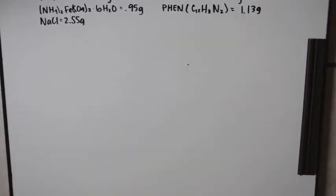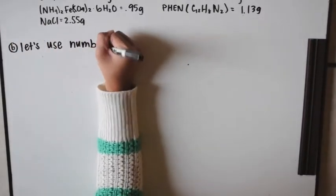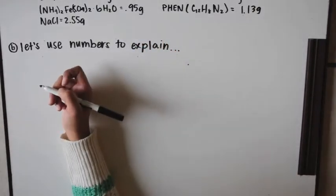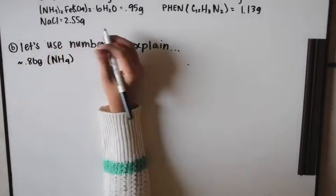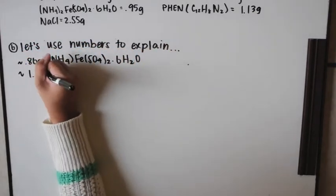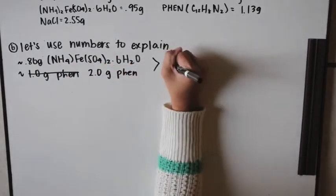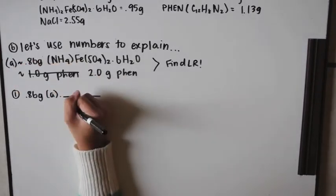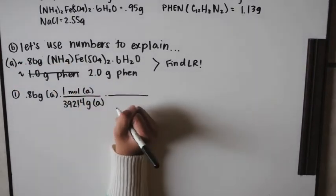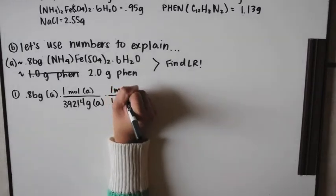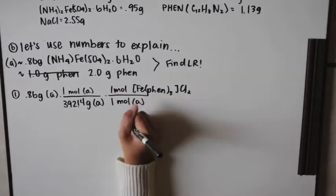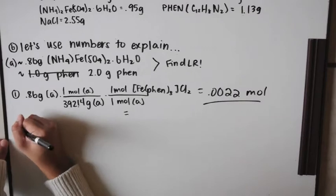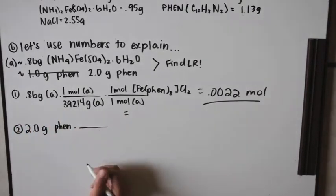Number six asks: if a student adds twice as much phenanthroline as required, how does this affect her numbers? Using the lab book values — approximately 0.86 grams of ferrous ammonium sulfate and 2 grams of phen (doubled) — we find the limiting reactant. For 0.86 g ferrous ammonium sulfate, that's 0.0022 moles of product; for 2 g phen, that's 0.0037 moles.